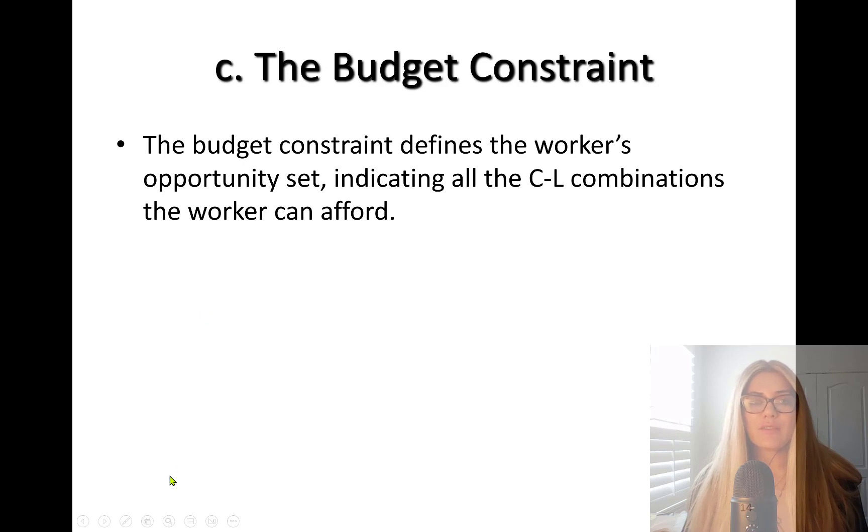Budget line or budget constraint defines a worker's opportunity set, indicating all the consumption-leisure combinations a worker can afford.